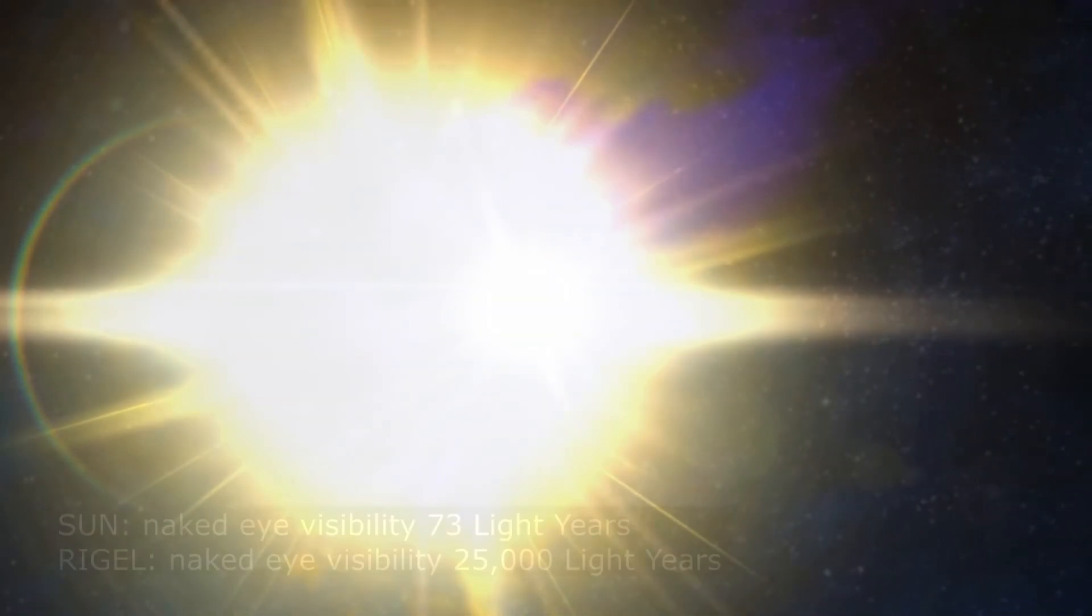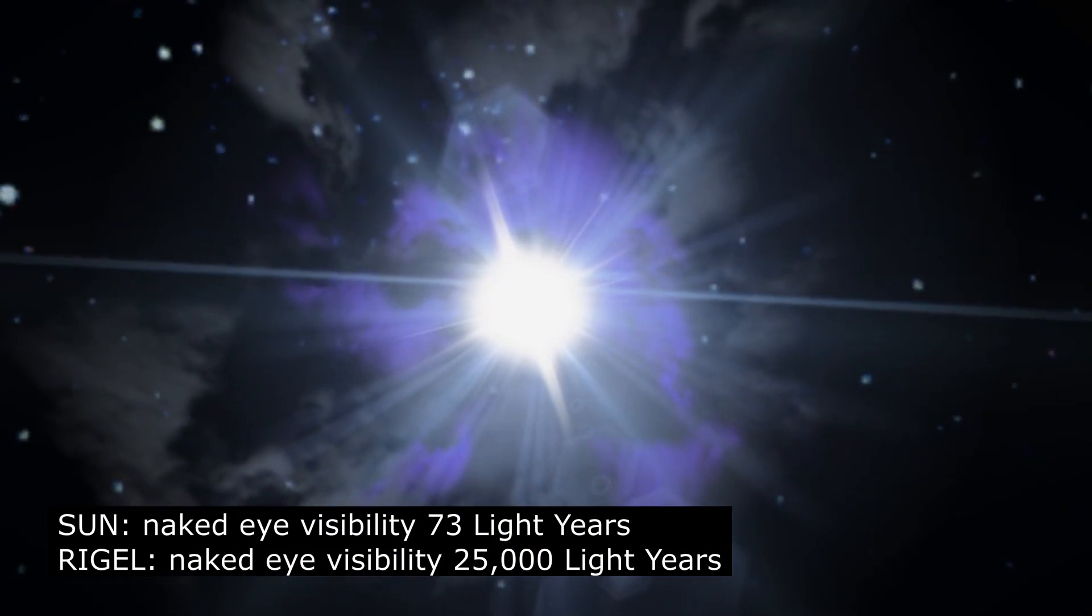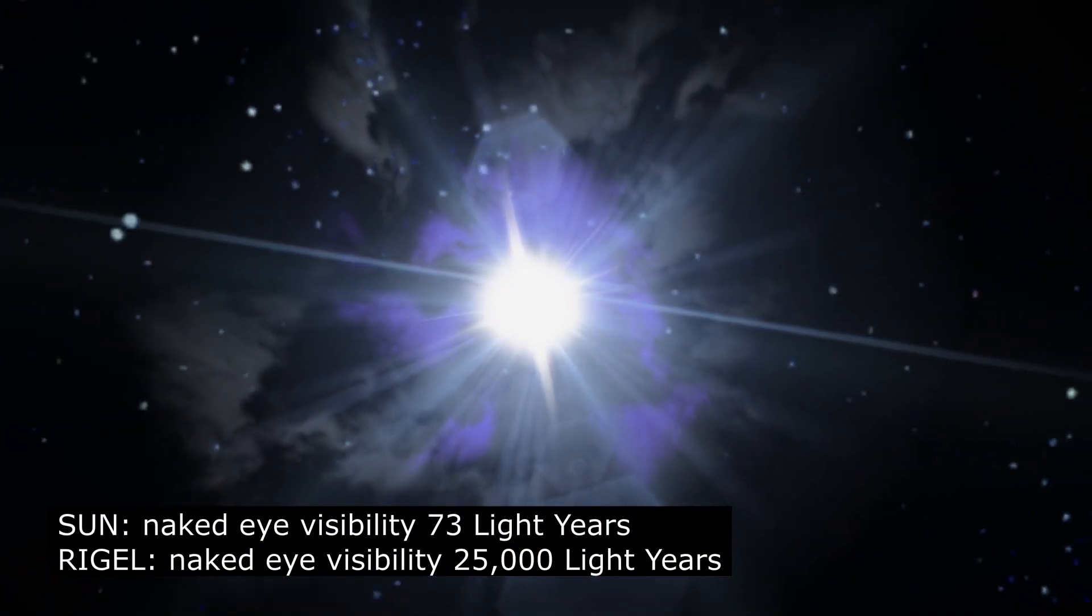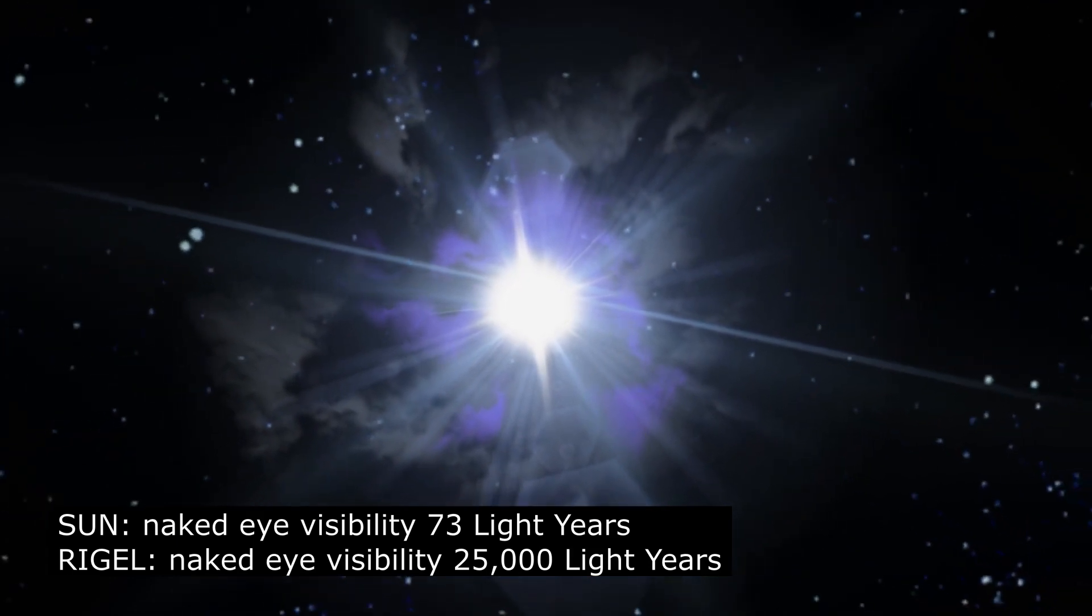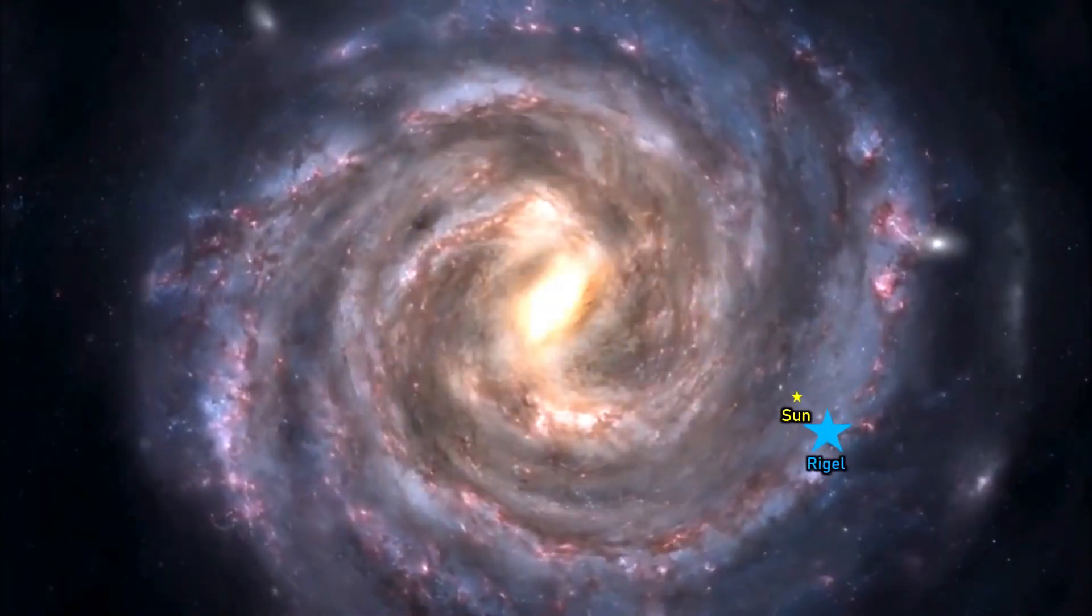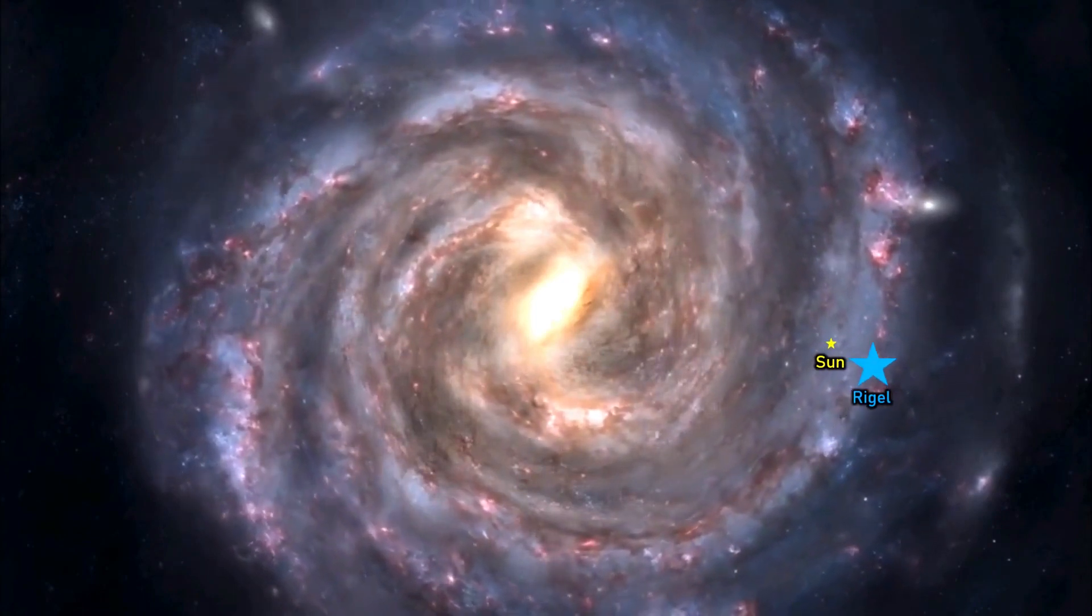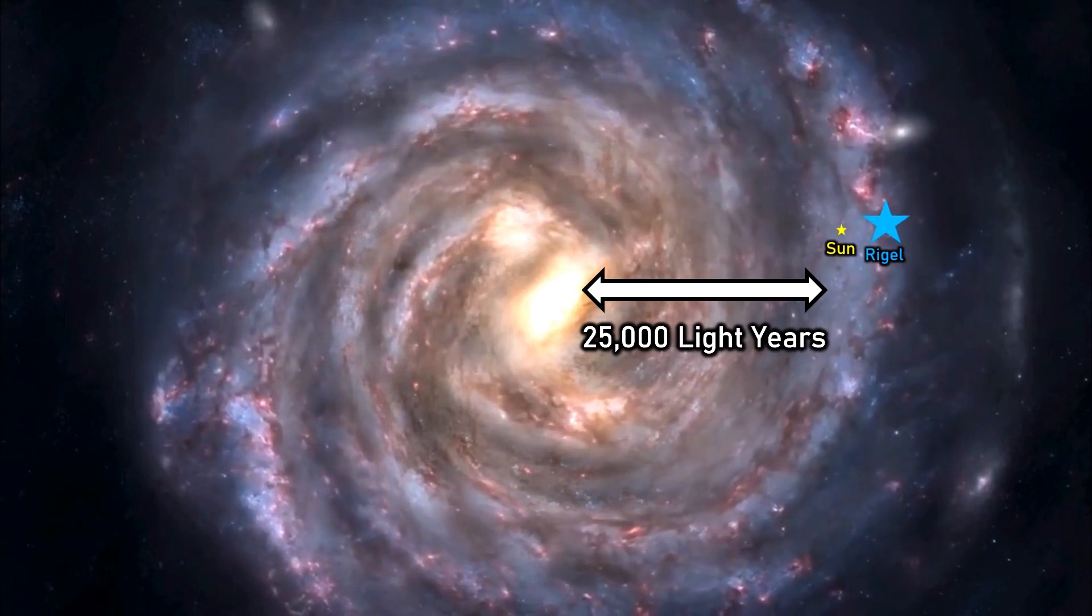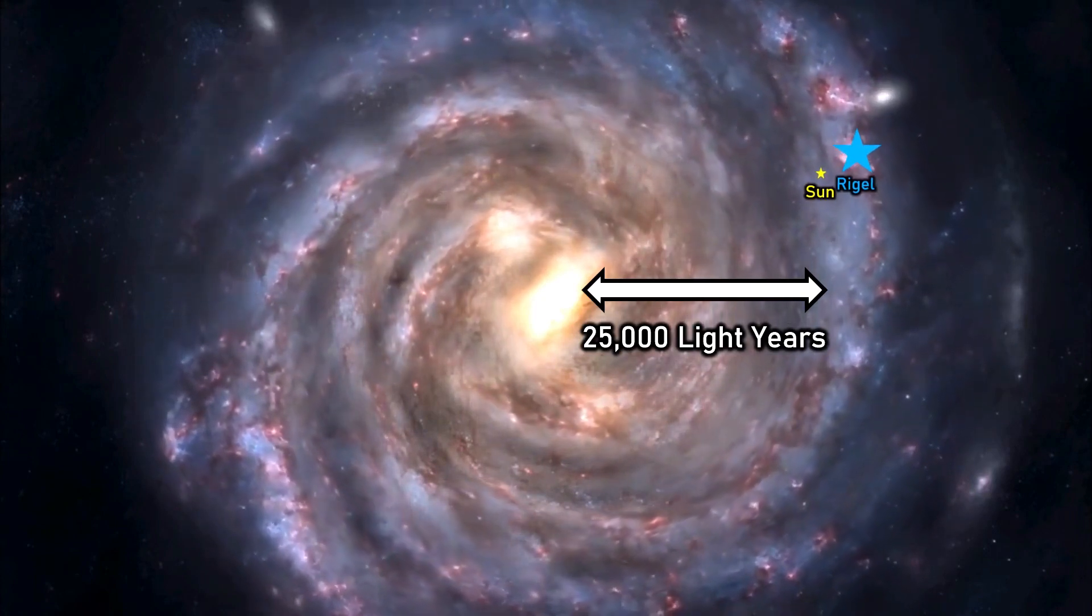Well, prepare to be amazed, because Rigel by contrast, would still be visible to the naked eye approximately 25,000 light years away, still boasting that key apparent magnitude of 6.5. For reference, that is approximately one quarter of the way across our entire Milky Way galaxy, or indeed, as far as the Sagittarius A star that lies in the centre.